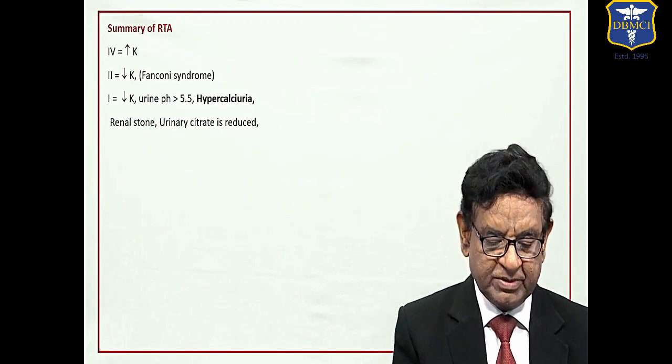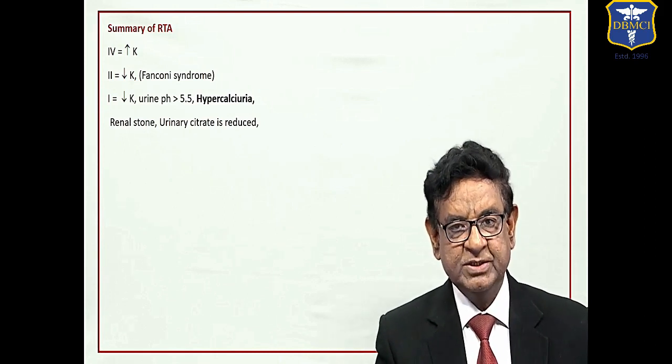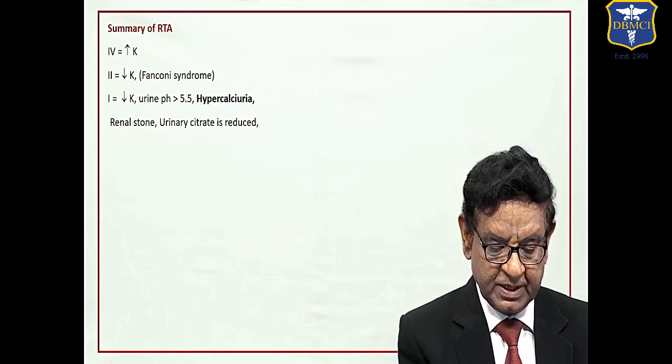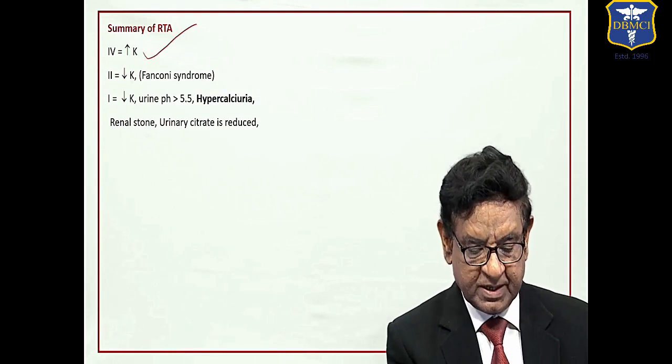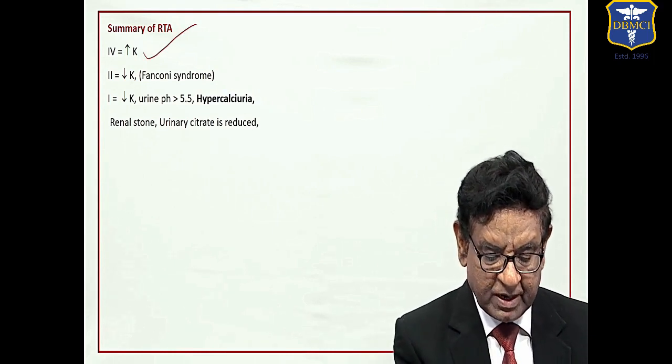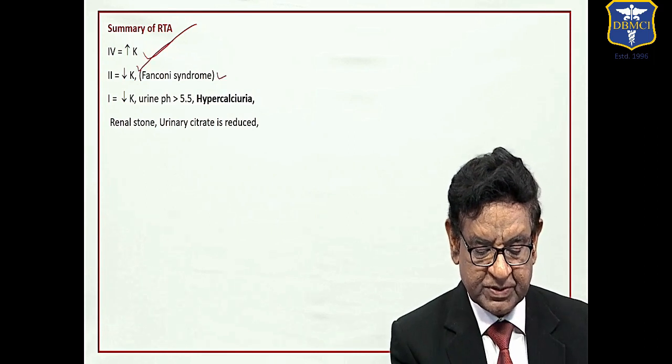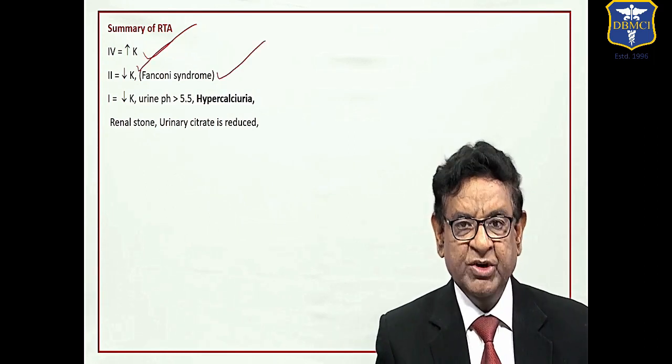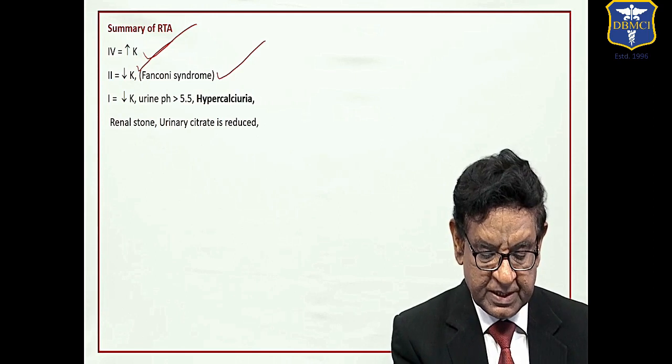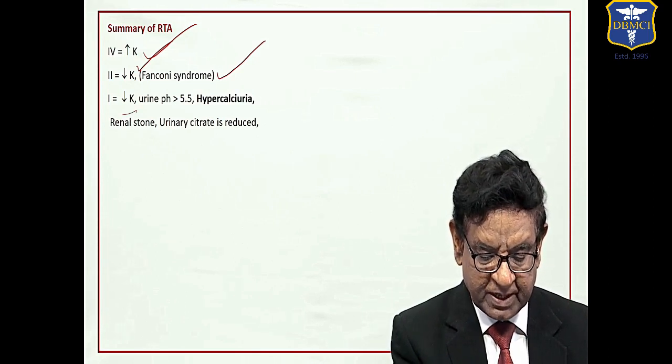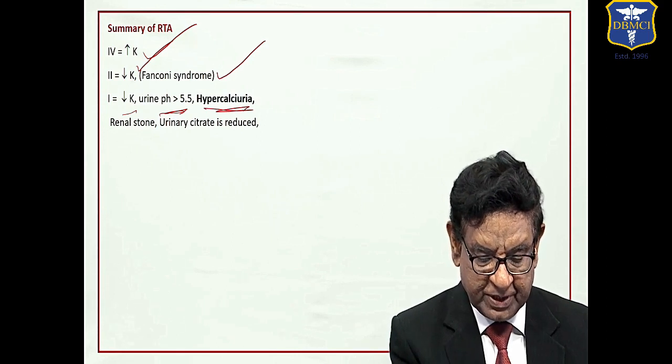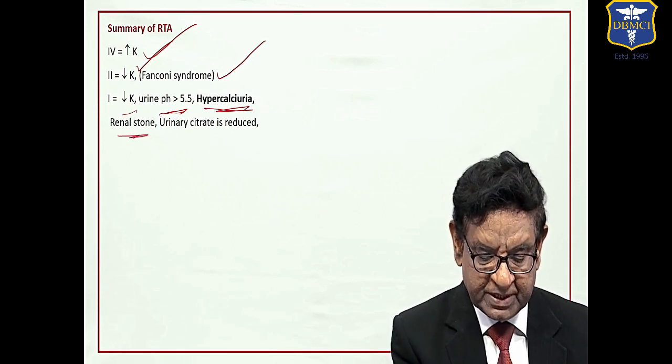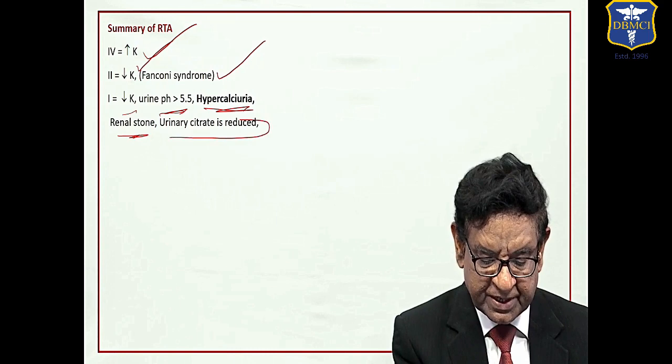Now let me give you summary of the RTA. Points to remember are: in type 4 RTA hyperkalemia occurs. In type 2 RTA hypokalemia occurs, which typically occurs in conditions like Fanconi syndrome. Type 1 RTA hypokalemia occurs, but urine pH is more than 5.5, hypercalciuria, renal stone formation because urinary citrate is reduced.